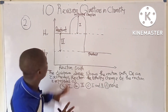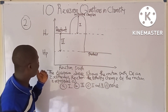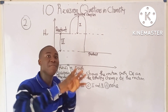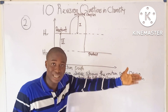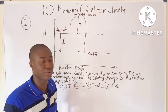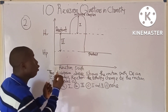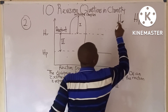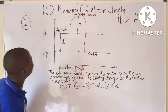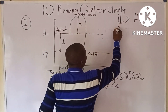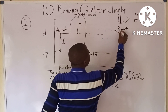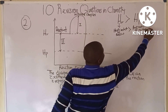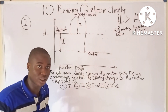Question two shows a diagram of an exothermic reaction. We have two types of thermal reactions: endothermic and exothermic. This diagram shows an exothermic reaction because HRO (heat content of reactants) is greater than HP (heat content of products).